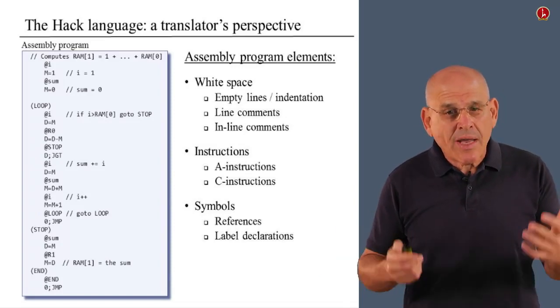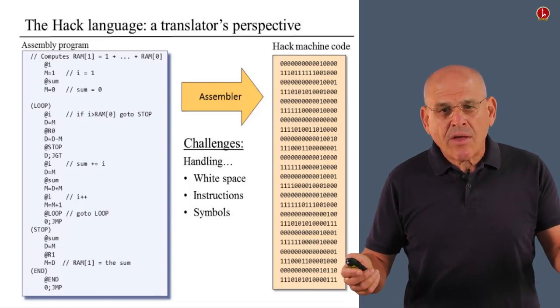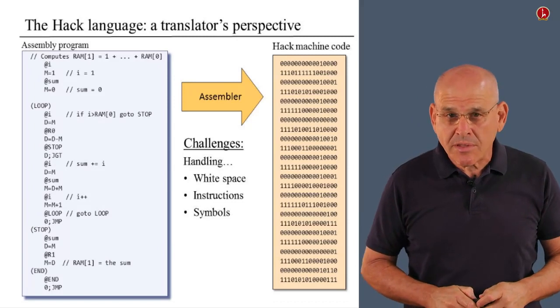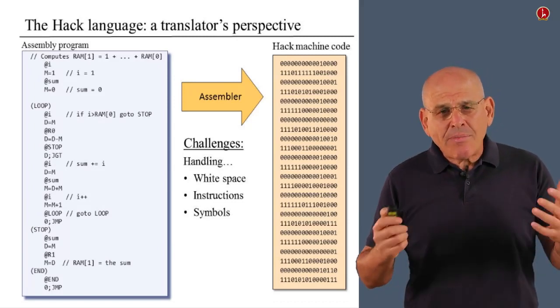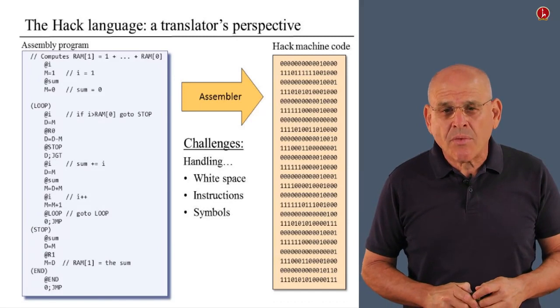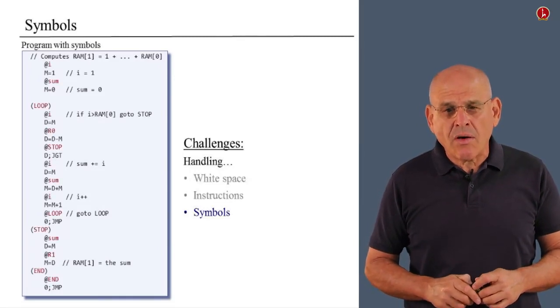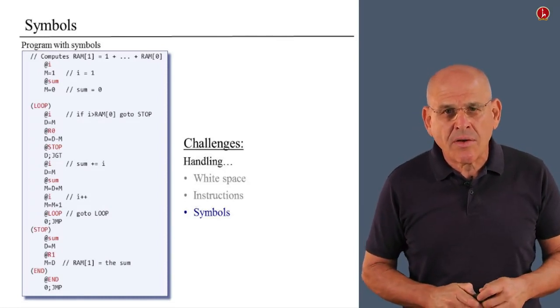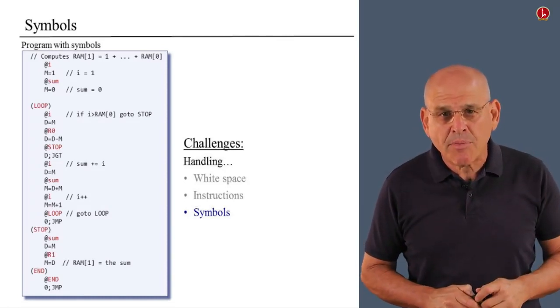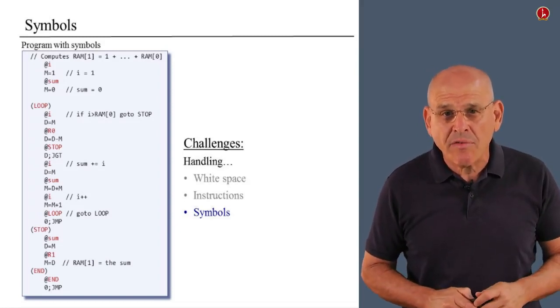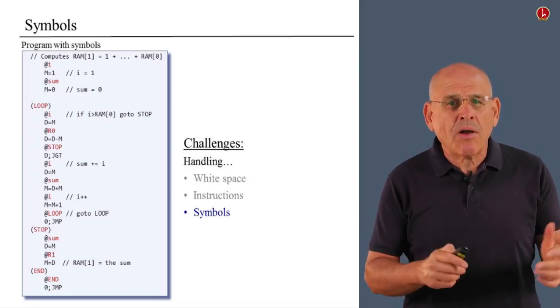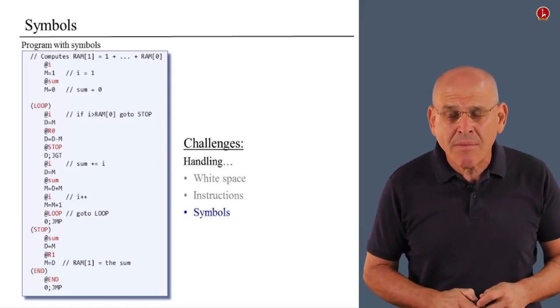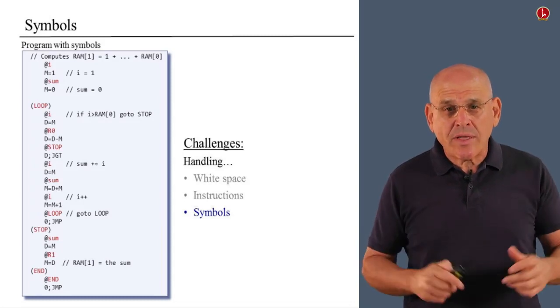To make a long story short, if you want to write an assembler, you have to know how to deal with white space, with instructions, and with symbols. Let me say a few words about symbols before we go along. I have used red ink in what you see here in order to highlight all the symbols that appear in this program. As you can see, there are quite a few of them. That's quite characteristic to symbolic machine language programs. They have numerous symbols in them. So the question is, how do we deal with these symbols?